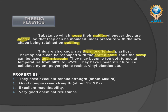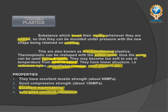These scraps can be used again and again. They may become too soft to use at temperatures from 60 to 325 degrees Celsius. They have a linear structure — examples include cellulose, nylons, polythene, and vinyl plastics. Their properties include excellent tensile strength of about 600 MPa, good compressive strength of about 150 MPa, good machinability, and very good chemical resistance as they do not react with chemicals.